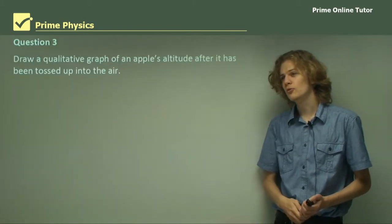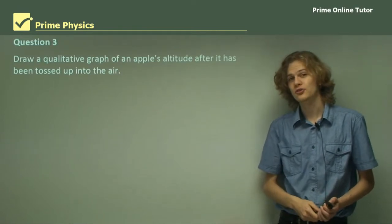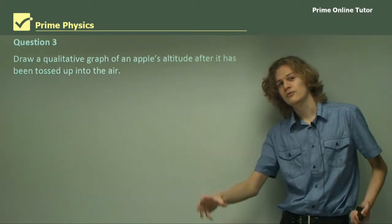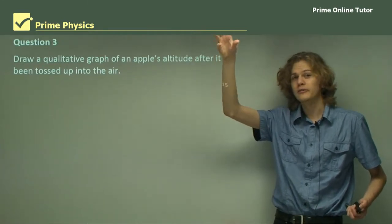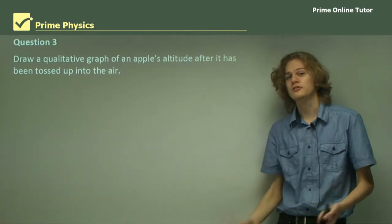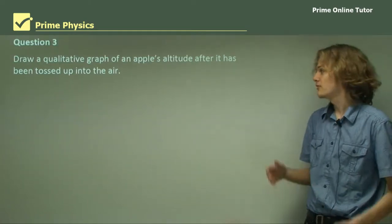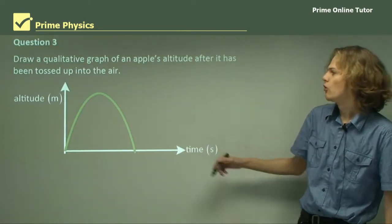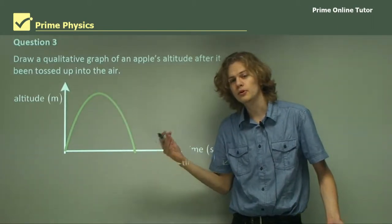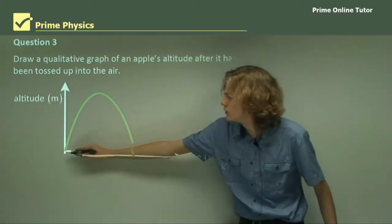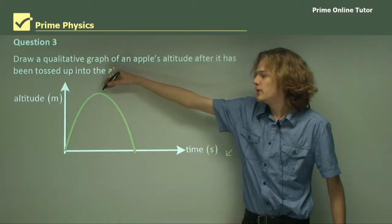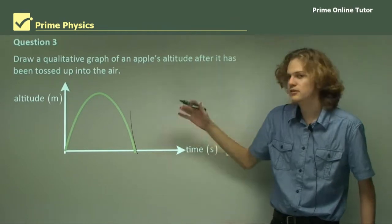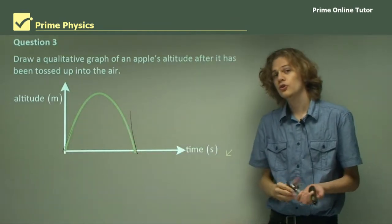Question 3. Draw a qualitative graph of an apple's altitude after it has been tossed up into the air. When we throw something into the air, it starts off moving quite fast. As gravity pulls down on it, it slows down, then stops, then turns around and falls back down, eventually reaching the same speed it started with. On the x-axis we have time, on the y-axis we have displacement — or in this case altitude. At the start it's moving fast, at the peak it levels out, then the negative slope on the way down mirrors the positive slope at the start. Your graph should look like a smooth arc.